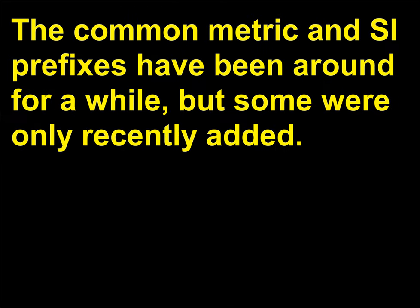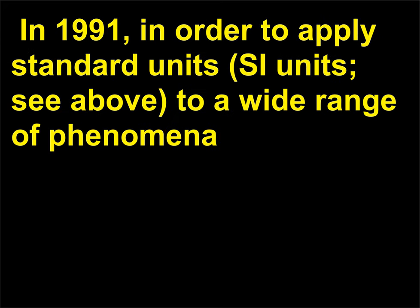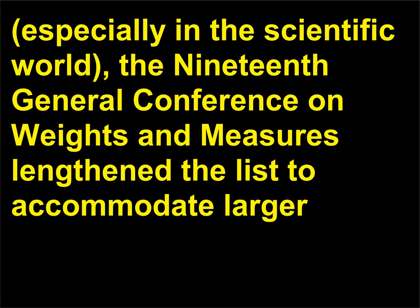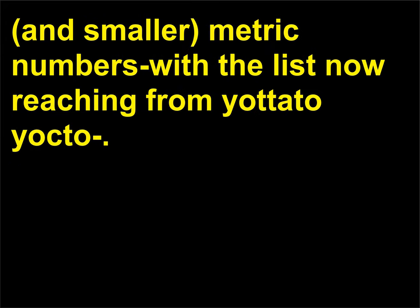The common metric and SI prefixes have been around for a while, but some were only recently added. In 1991, in order to apply standard units (SI units) to a wide range of phenomena — especially in the scientific world — the 19th General Conference on Weights and Measures lengthened the list to accommodate larger and smaller metric numbers, with the list now reaching from yotta to yocto.